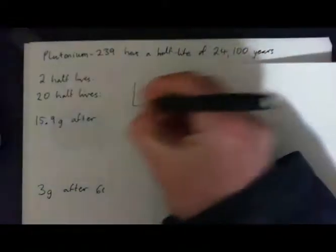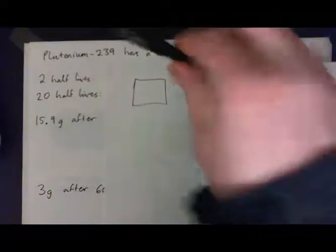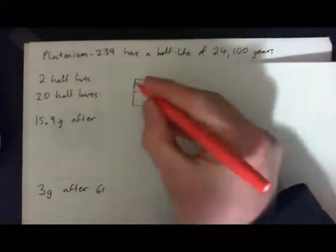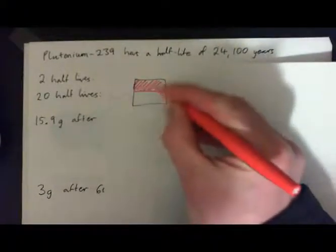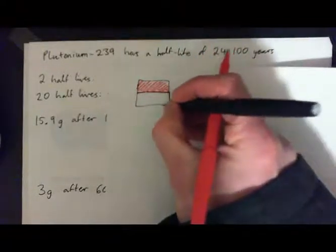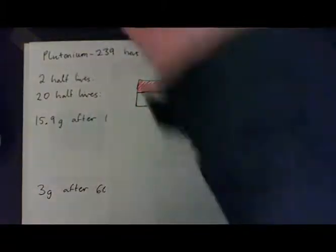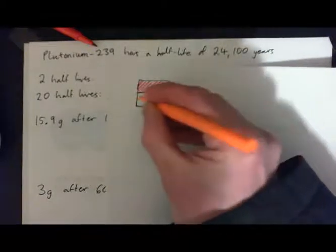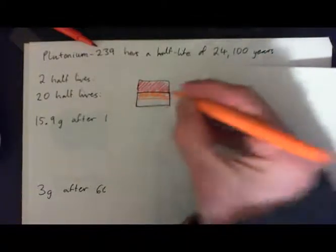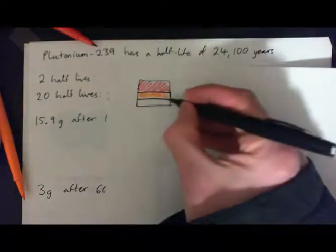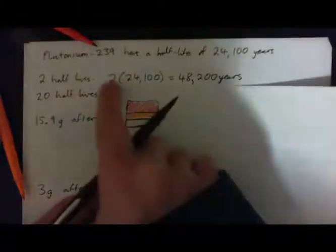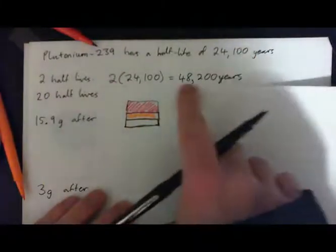After 24,100 years, half of it has disintegrated and disappeared and gone away, and you're left with half. And after another half-life, another half of it has disintegrated and gone away. So you take this part away, and now you're just left with this amount. That's kind of how it works.